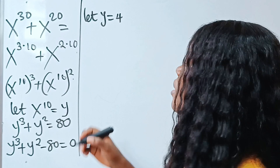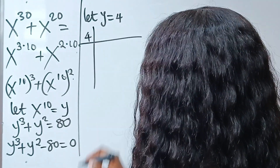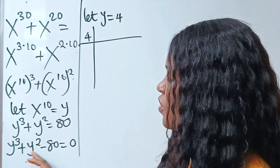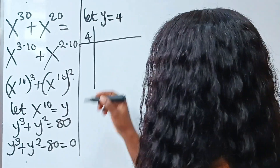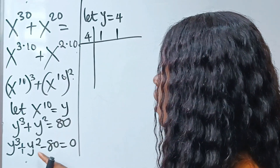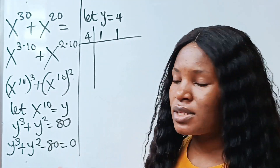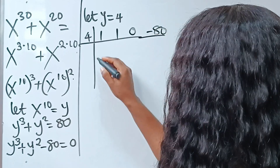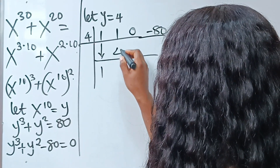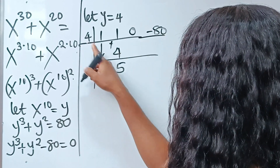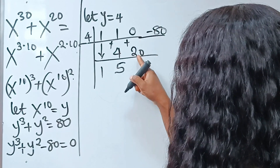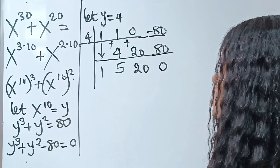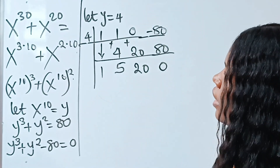We pick the coefficients of each term. The coefficient of y cubed is 1, the coefficient of y squared is also 1. Since there is no y term, its coefficient is 0, and then we have minus 80. Bring down the 1. 4 times 1 is 4; add 1 plus 4 to get 5. 4 times 5 is 20; add 0 plus 20 to get 20. 4 times 20 is 80; minus 80 plus 80 is 0. We get zero, so the synthetic division is correct.